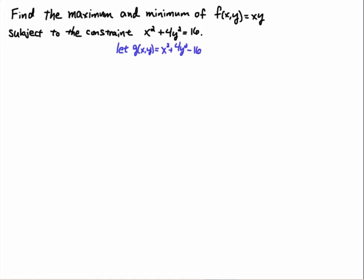So let's go ahead and do that. We're going to let g(x) equal x squared plus 4y squared minus 16, moving the minus 16 over and writing this as an implicit function. Then we're going to take the gradients of f and g because we're going to use the Lagrange multiplier method. The gradient of f is the vector (y, x). And the gradient of g — taking the partial with respect to x gives 2x, and the partial with respect to y gives 8y.